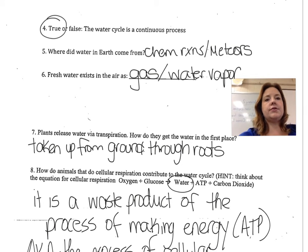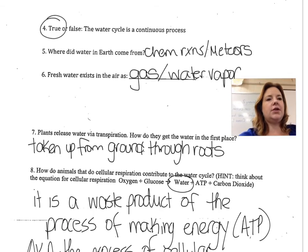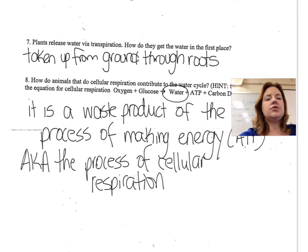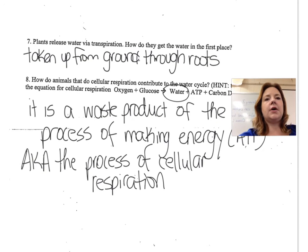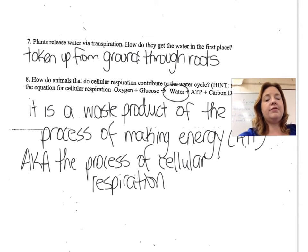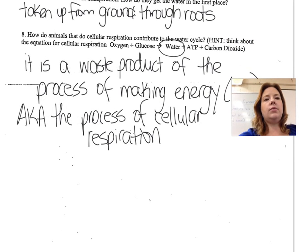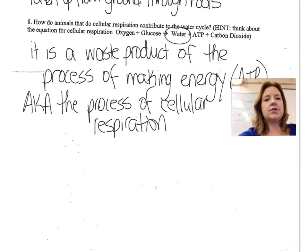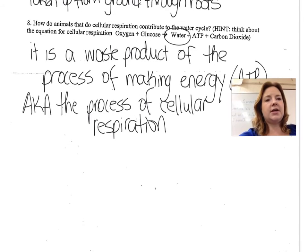Here are the answers for the other side of the worksheet. Number one should be true. Number five: chemical reactions and meteors. Number six: gas or water vapor. Number seven: transpiration is where water releases from plants as a gas, and it gets taken up through the roots from the ground. Number eight: water is a waste product of the process of making energy — ATP — also known as cellular respiration. You can always come back to this video to double-check your answers.